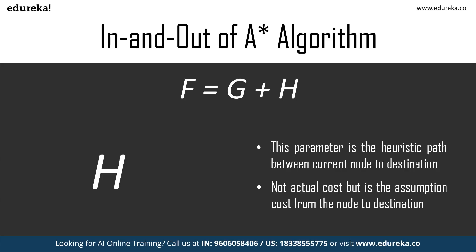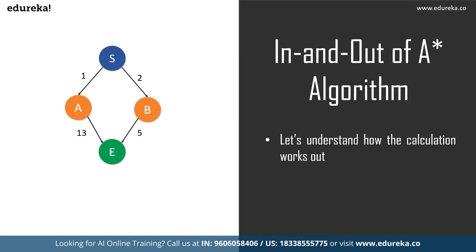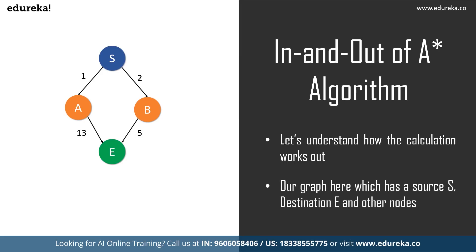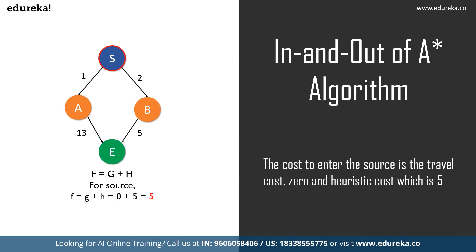Let me show a simple example to help you understand how this algorithm works. Suppose we have a small graph with vertices S, A, B, and E, where S is the source and E is the destination. The cost to enter the source and destination is always zero — so the cost to enter S and E is always zero. The heuristic values are: S = 5, A = 4, B = 5, and E = 0. Using the formula F = G + H, where G is the travel cost and H is the heuristic value: f(S) = 0 + 5 = 5.